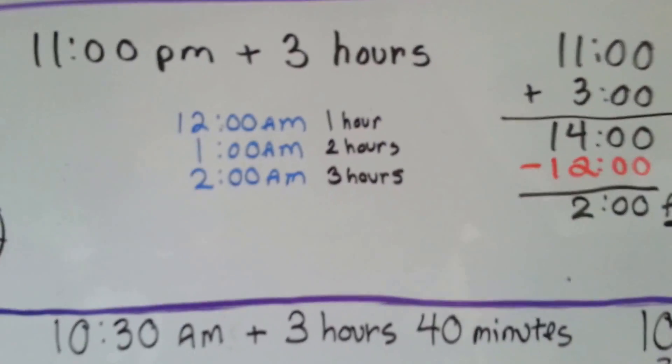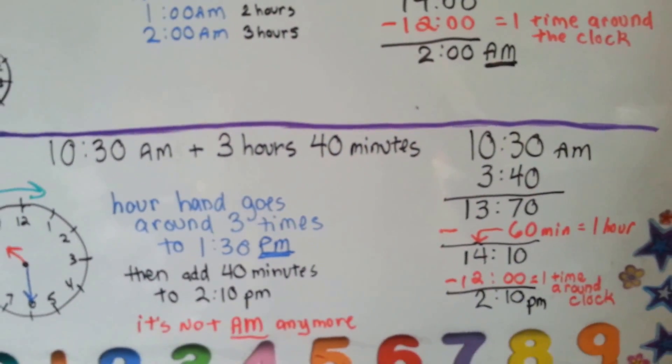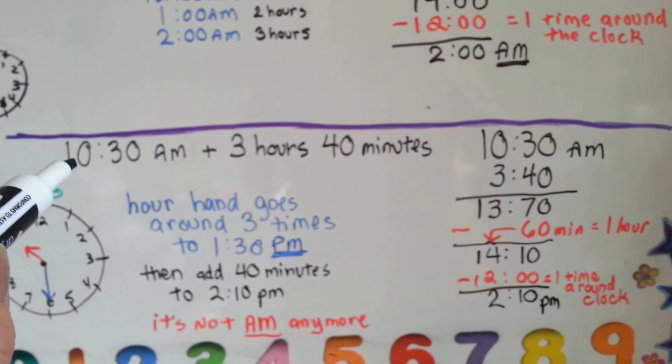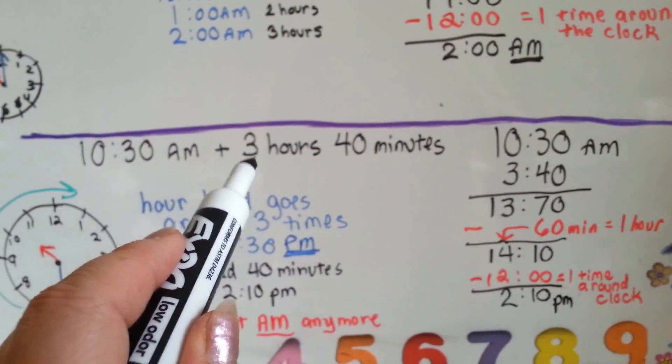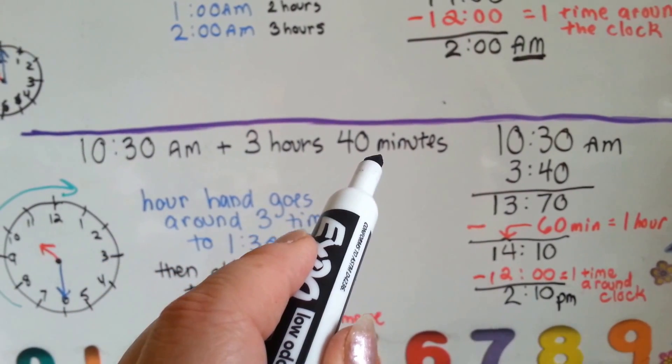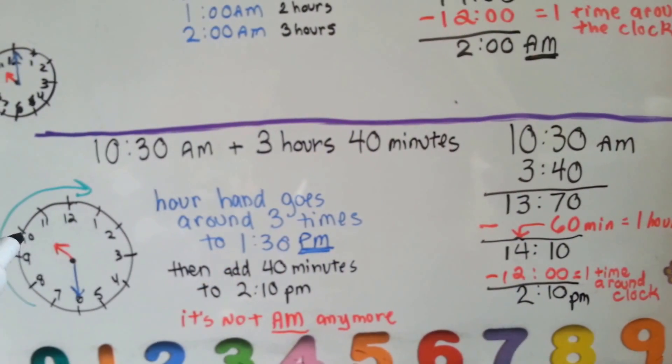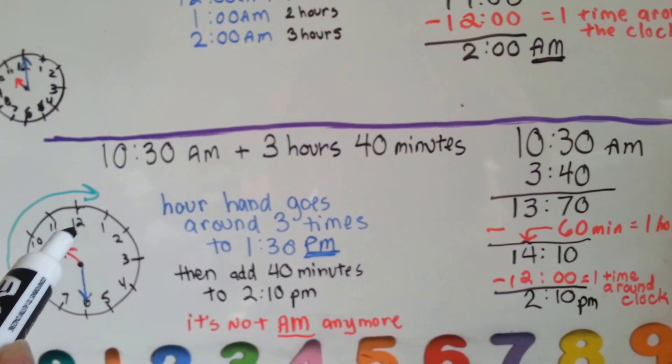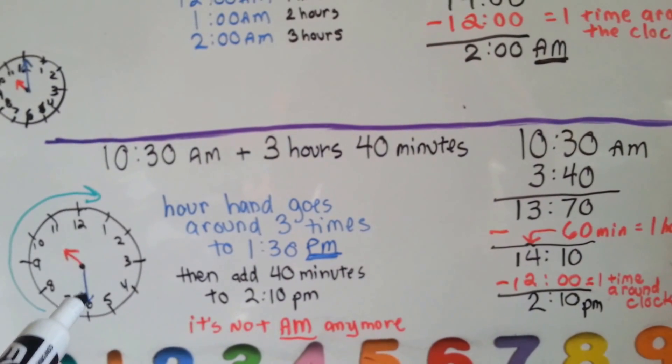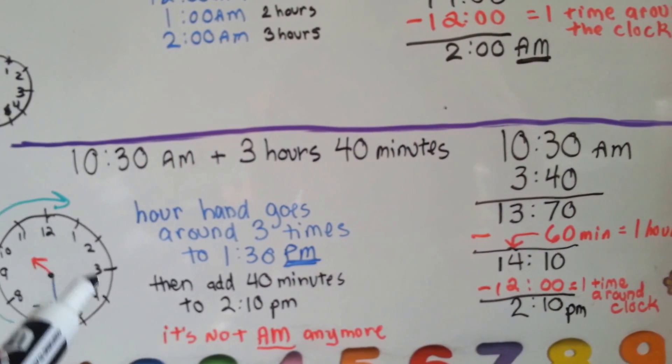Now we're going to do one that's a little harder. So, put your thinking caps on. It's 10:30 in the morning, 10:30 AM. We're going to add 3 hours and 40 minutes. It's 10:30 in the morning, and we're going to add 3 hours and 40 minutes. So, the hour hand is going to go 3 hours, and the minute hand is going to go an extra 40 minutes.